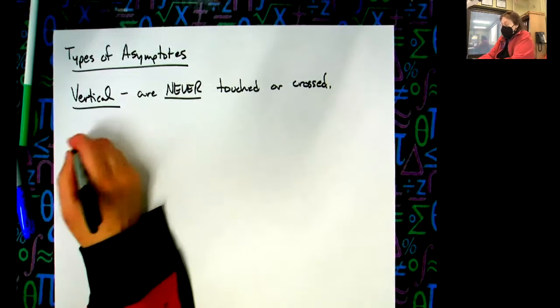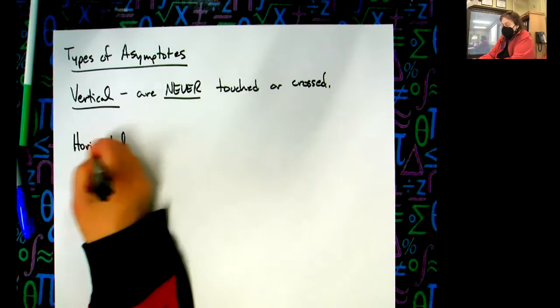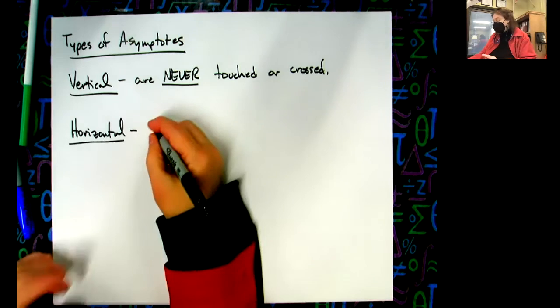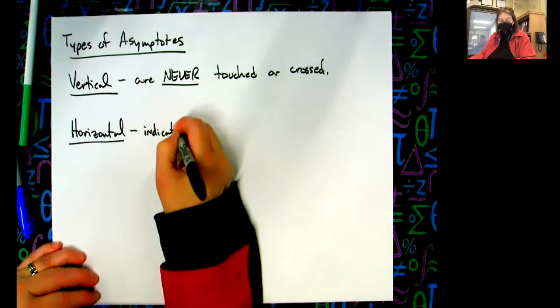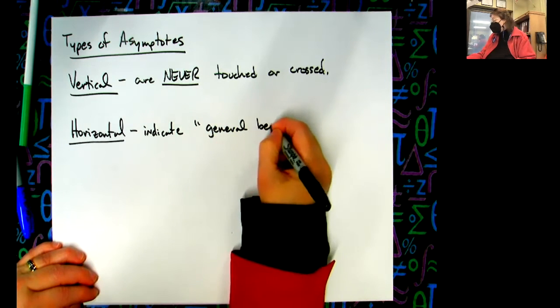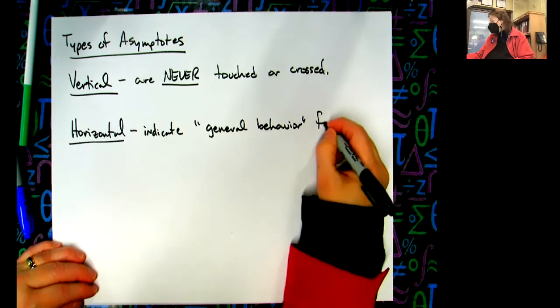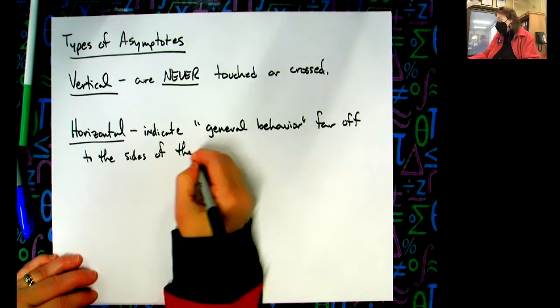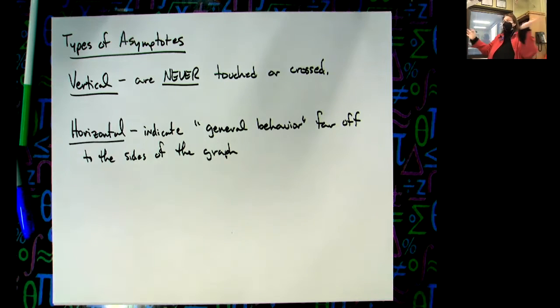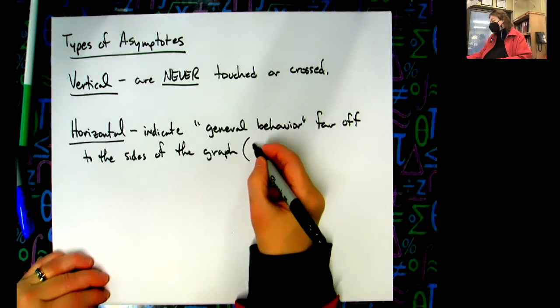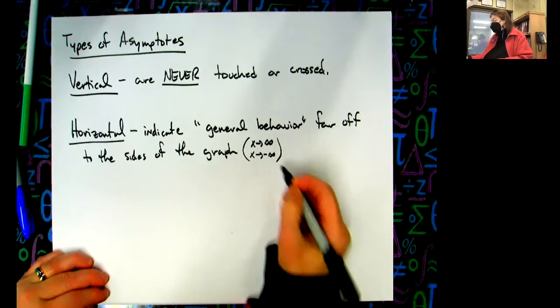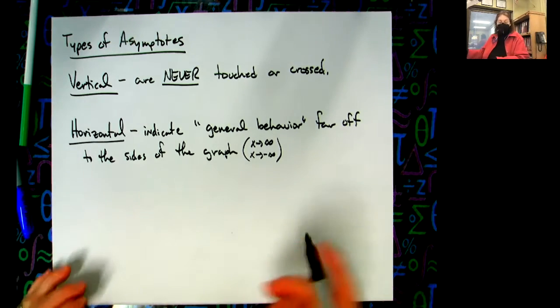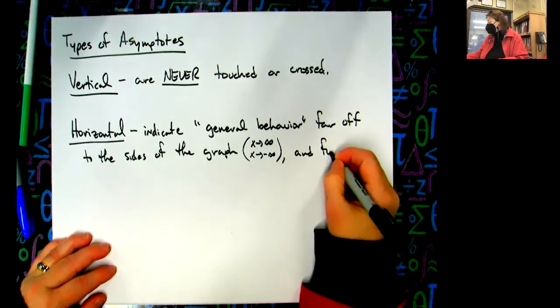Then we have horizontal ones. Now this definition will be extremely important next year for calculus. It says horizontal asymptotes indicate the general behavior far off to the sides of the graph. So as x approaches positive infinity or as x approaches negative infinity, that's what we're talking about when I say it describes the end behavior - the general behavior far off to the sides of the graph, as x approaches positive or negative infinity.